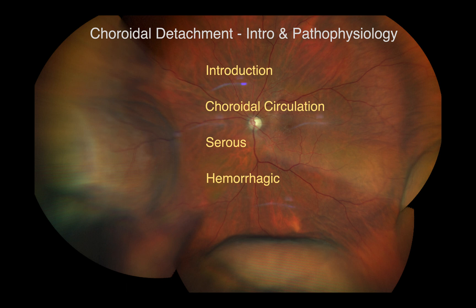Hemorrhagic detachment may occur intraoperatively or postoperatively. If they occur intraoperatively, they are called expulsive suprachoroidal hemorrhage because they expel intraocular contents to the surgical wound and visual prognosis is poor.